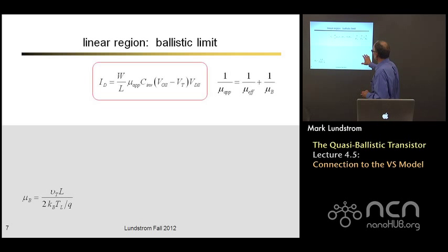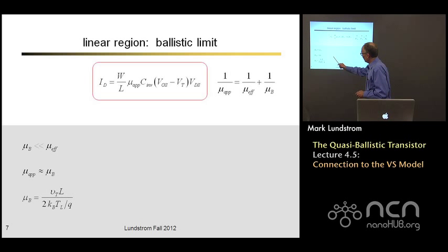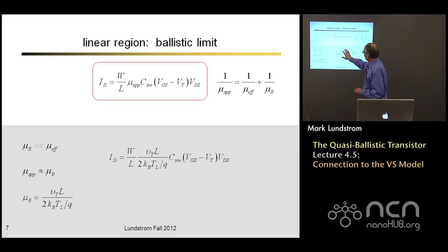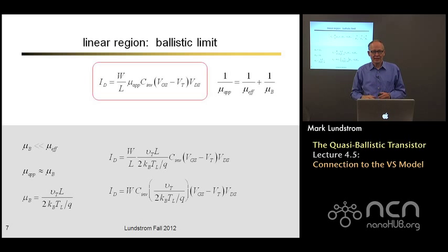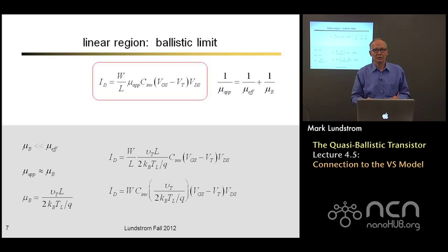To look at what happens in the ballistic limit: for very short channel lengths, the ballistic mobility will be much less than the real mobility, so the apparent mobility becomes the ballistic mobility. Plugging the ballistic mobility into the expression, the length from the ballistic mobility cancels with the W/L out front, and we get a ballistic current that is independent of channel length — exactly the way it should be. This simple prescription of replacing the real mobility by the apparent mobility gives us a model that works all the way from the ballistic to the diffusive regime.